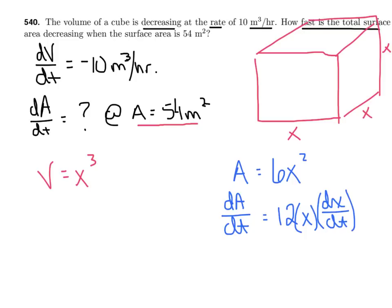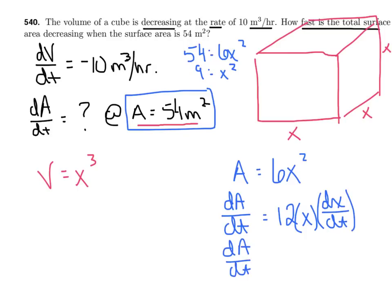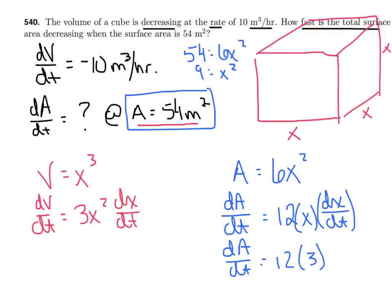We paused at the moment when the area is 54. If A = 6x² = 54, then x = 3. So we substitute 3 in for x. Then I'll differentiate the volume formula V = x³ to find dx/dt. We have dV/dt = 3x² · dx/dt. Since dV/dt = −10 and x = 3, we get −10 = 3(9) · dx/dt, so dx/dt = −10/27. That's the rate at which each side is changing.